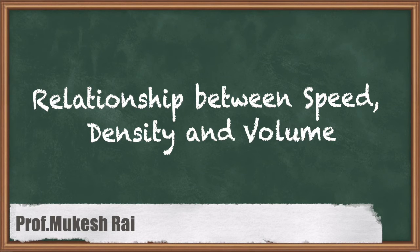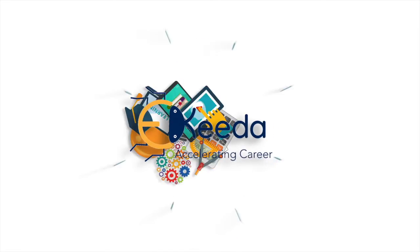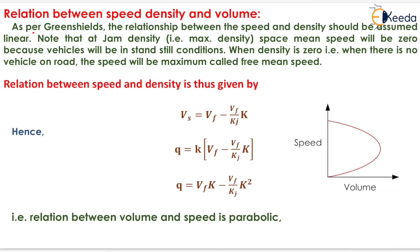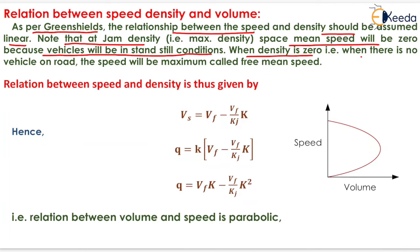Hello students, today we are going to study the relation between speed, density and volume. As per Greenshields, the relationship between speed and density should be assumed linear. Note that at jam density, that is the maximum density, space mean speed will be zero because vehicles will be in standstill conditions. When density is zero, that is when there is no vehicle on the road, the speed will be maximum, called the free mean speed.